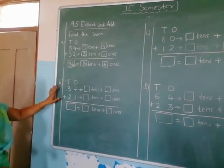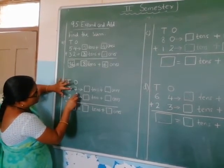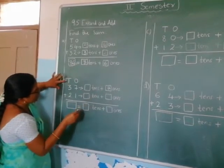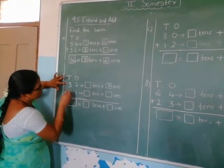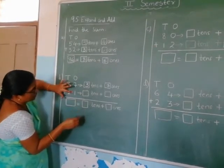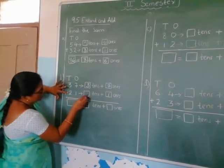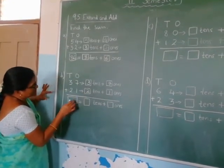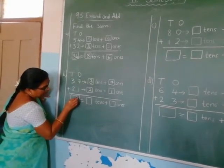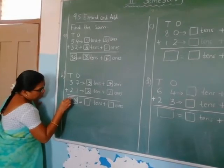Now the next one. Which number is in the ones place? It is 7 — write 7 here. In the tens place what is the number? It is 3 — write 3 here. Next: ones place is 1, write 1. Tens place is 2. Now let us add. 7 plus 1 is how much, children? It is 8 — write 8 here. 3 plus 2 is 5, so write 5 here.